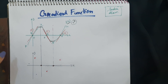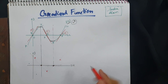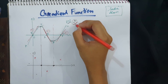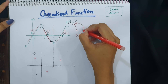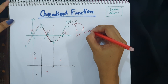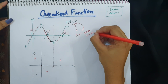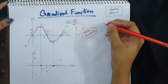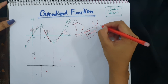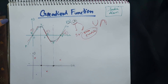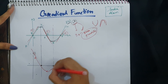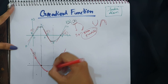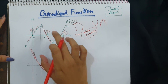We cannot just join these points with a straight line, because differentiating a cubic equation gives a quadratic equation. So the gradient graph will be a U-shaped (happy face or sad face) curve, not a straight line. We need to join the points with a smooth curve. That gives the sketch of the gradient function for this cubic equation.